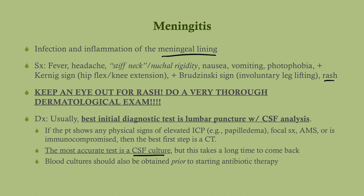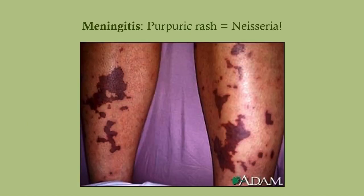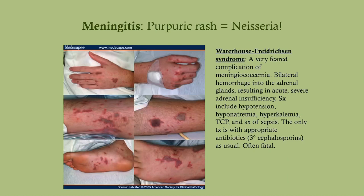The most accurate test for meningitis is a CSF culture, but this takes a long time, so we do a CSF analysis and treat presumptively. Blood cultures should also be obtained before starting antibiotic therapy. The purpuric rash seen in meningococcal meningitis is caused by Neisseria. A feared complication is Waterhouse-Friderichsen syndrome — adrenal insufficiency due to hemorrhage into the adrenal glands, which is often fatal.